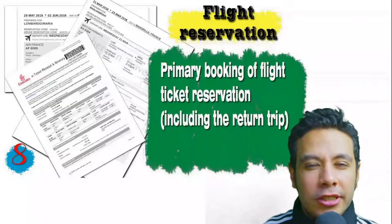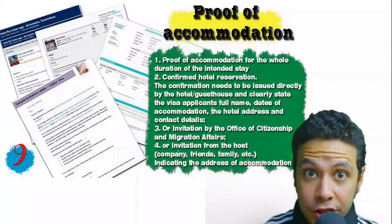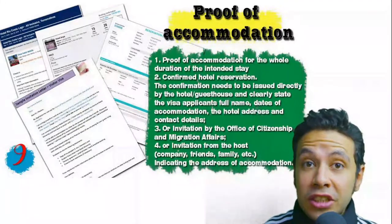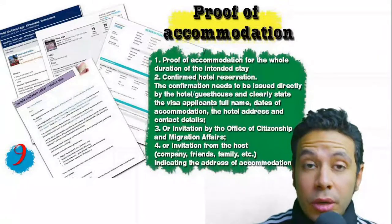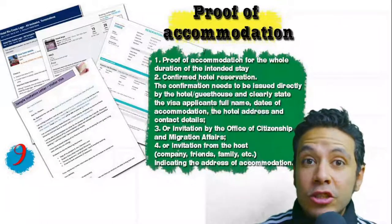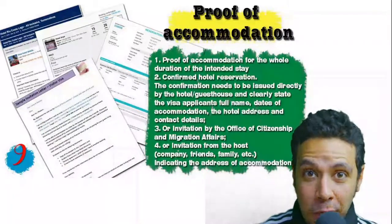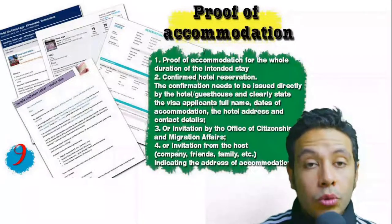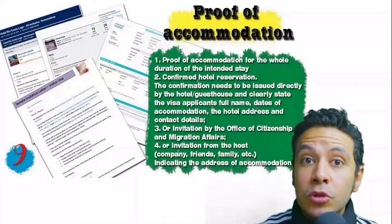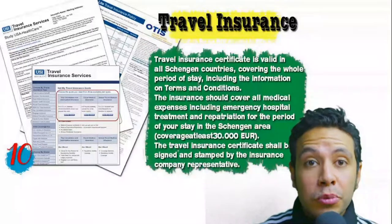You should also provide a flight reservation — it could be an initial booking, but in some minor cases you will need a confirmed booking. This flight reservation must include a return ticket. You will also need to provide proof of accommodation: a confirmed hotel reservation, an invitation from a host in this country, or an invitation from an organization you are visiting. For a hotel or hostel, an initial booking is acceptable but sometimes a confirmed booking may be required. The name, address, and contact number of your hotel must be mentioned. If invited by a person, the letter of invitation should be mailed directly to the embassy or submitted by you along with a copy of that person's passport.